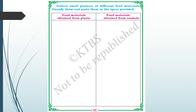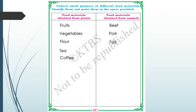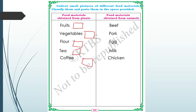Collect small pictures of different food materials, classify them, and paste them in the space provided. Food materials from plants include fruits, vegetables, flour, tea, and coffee. From animals we get beef, pork, egg, milk, and chicken. You can attach small pictures of any fruit, vegetable, flour, tea, or coffee.